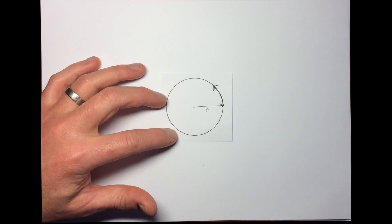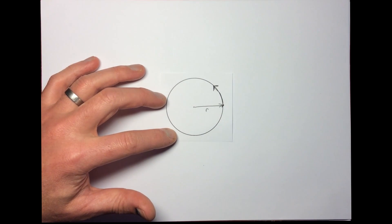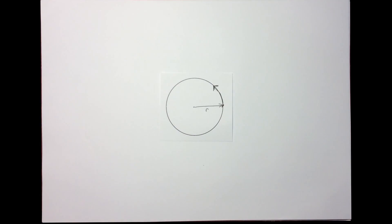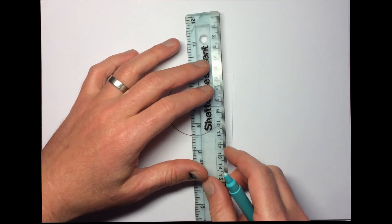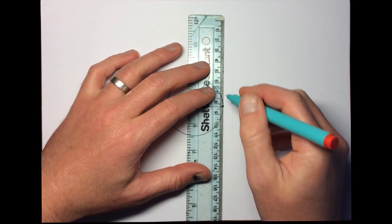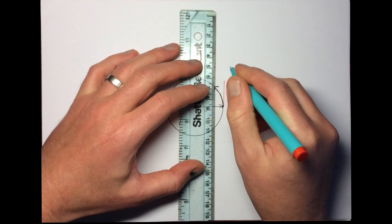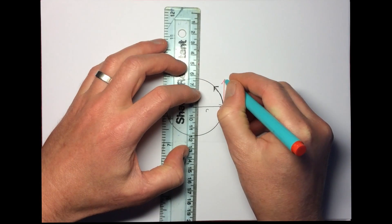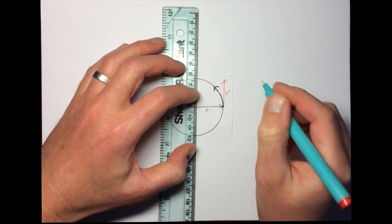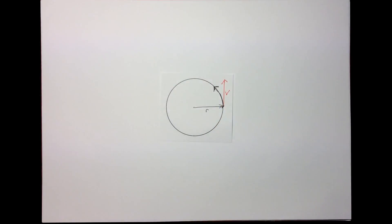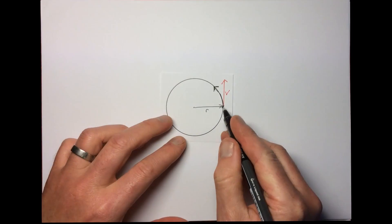If that object is traveling around at constant speed in that direction, its velocity at that particular moment is a tangent to the circle. So the instantaneous velocity would be directed straight up like that - it's a tangent to the circle at that point.